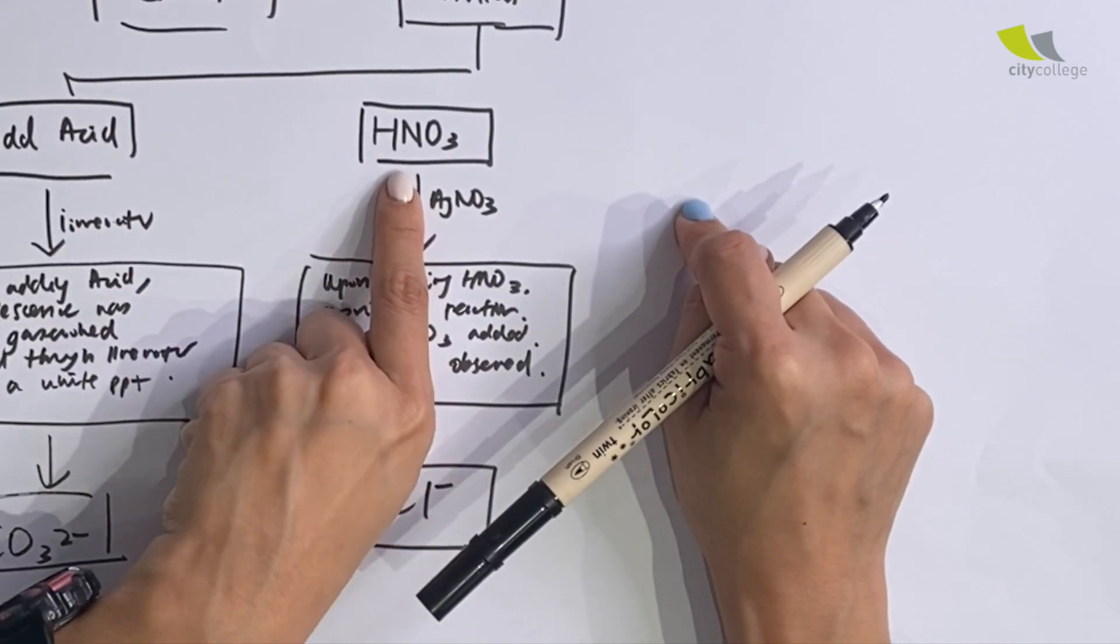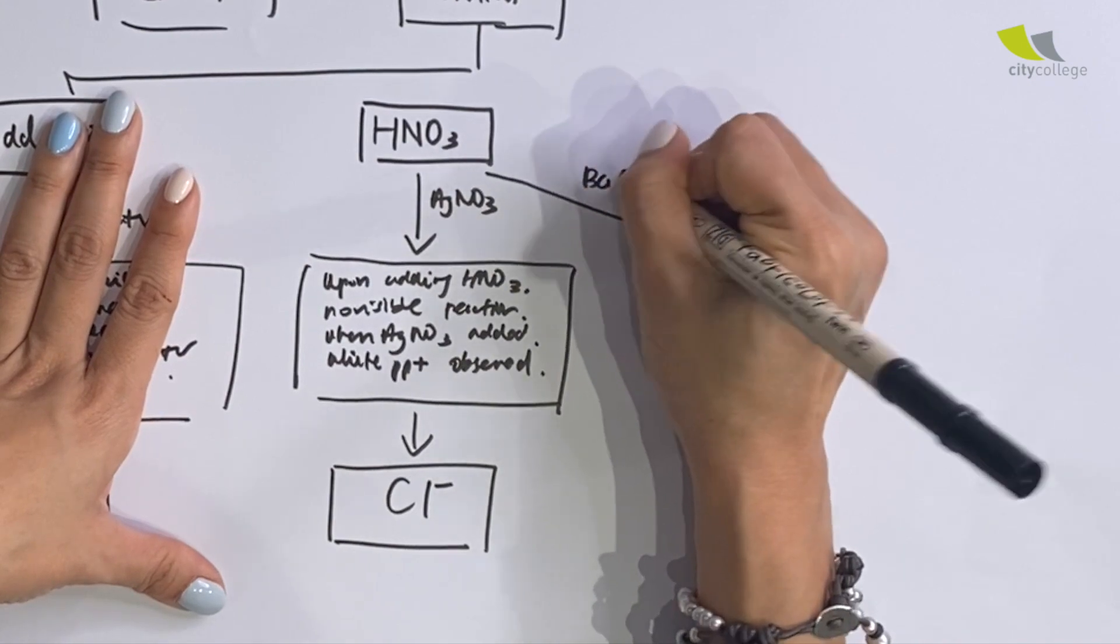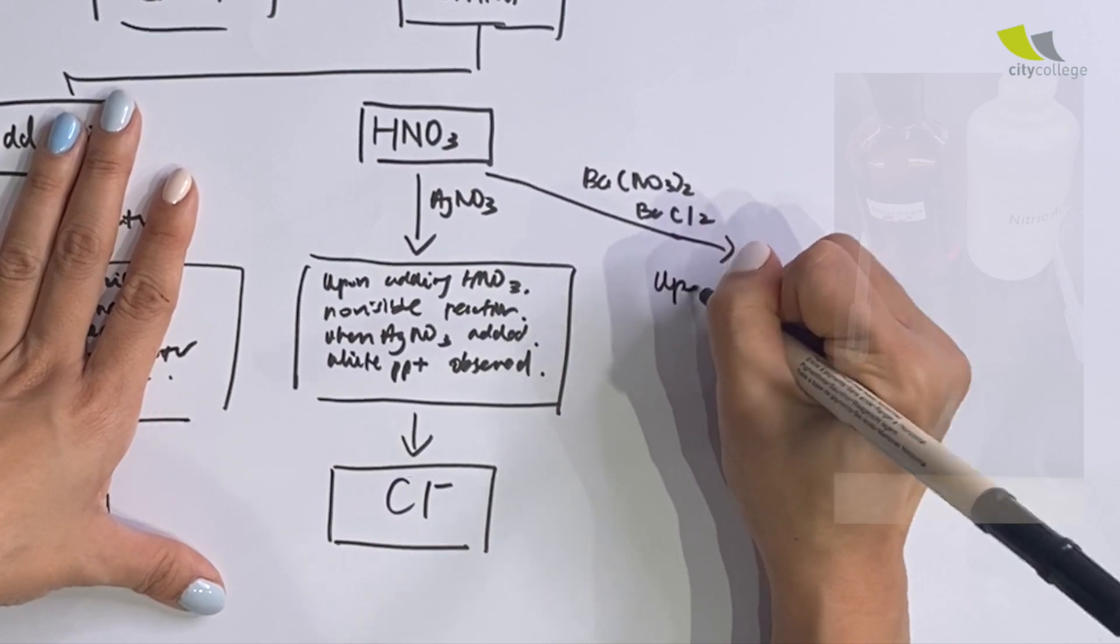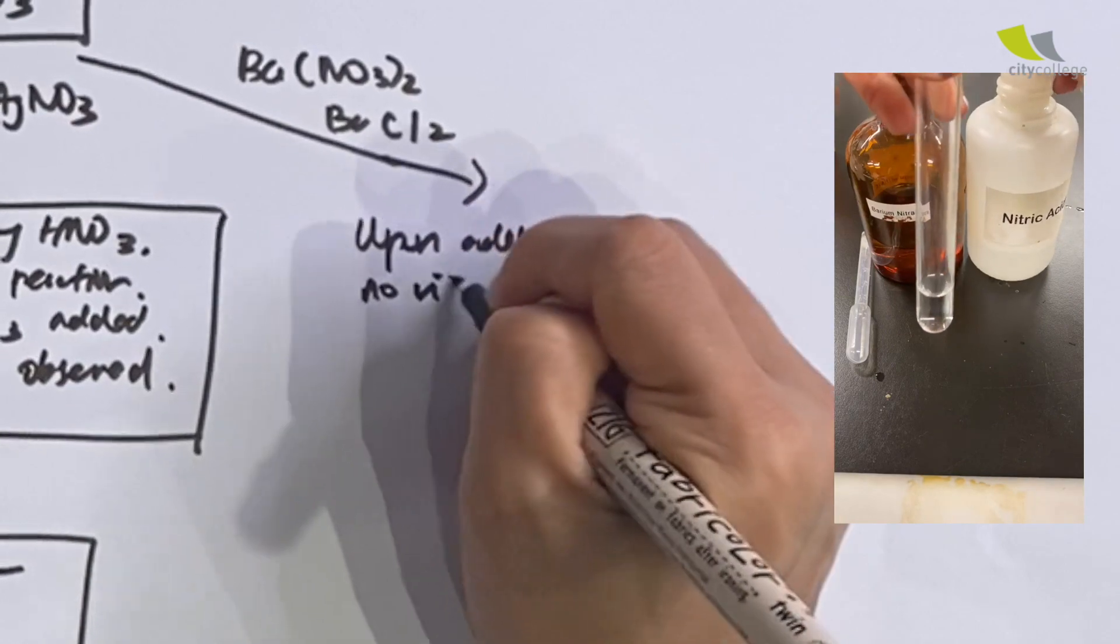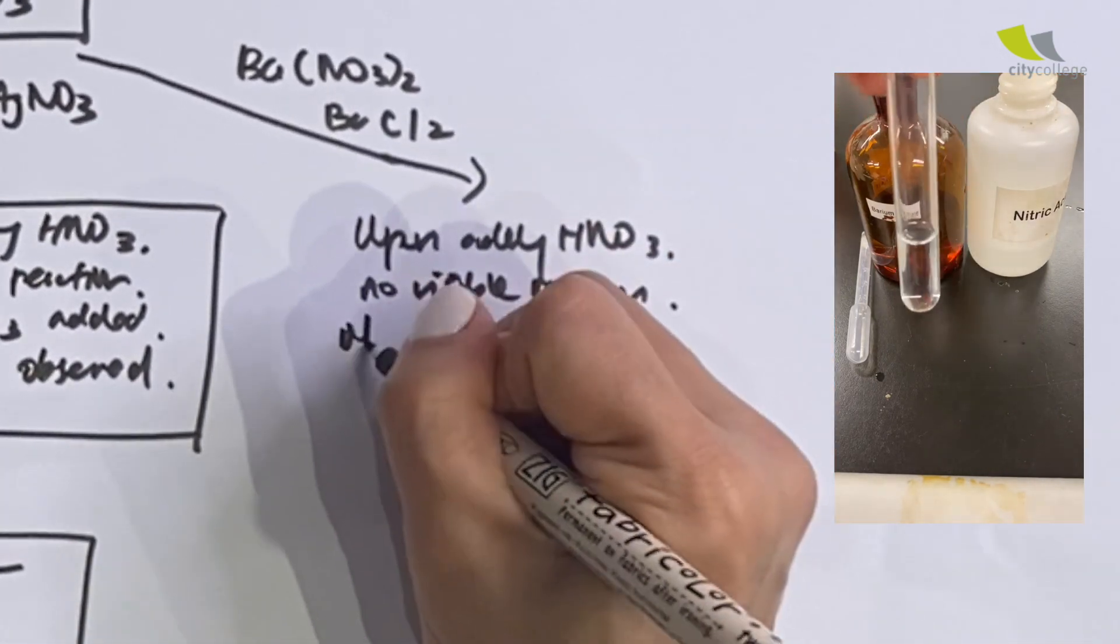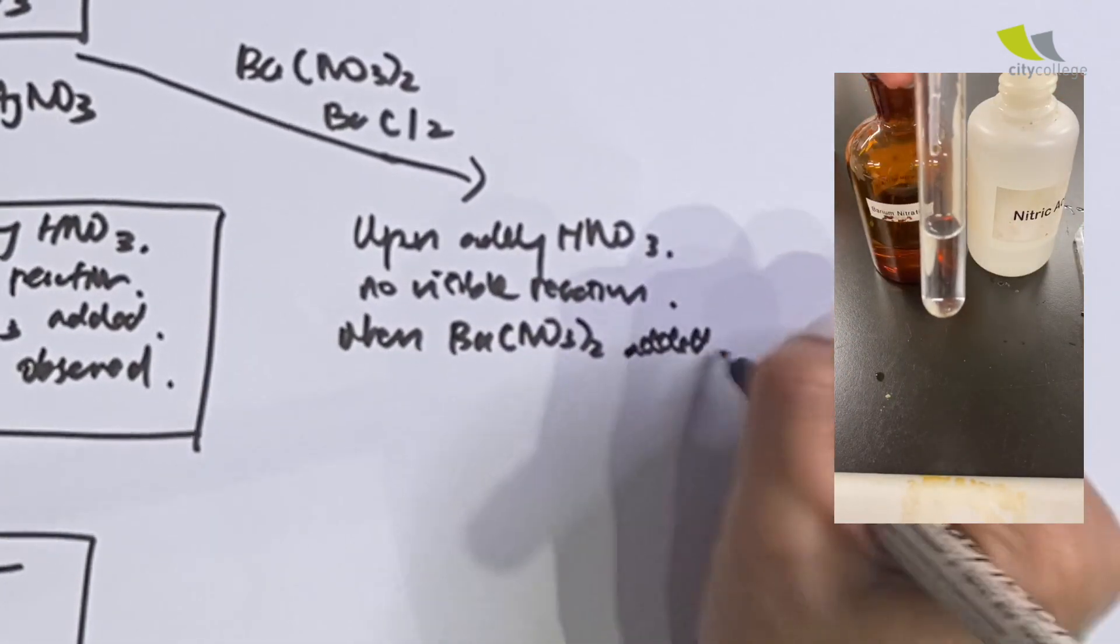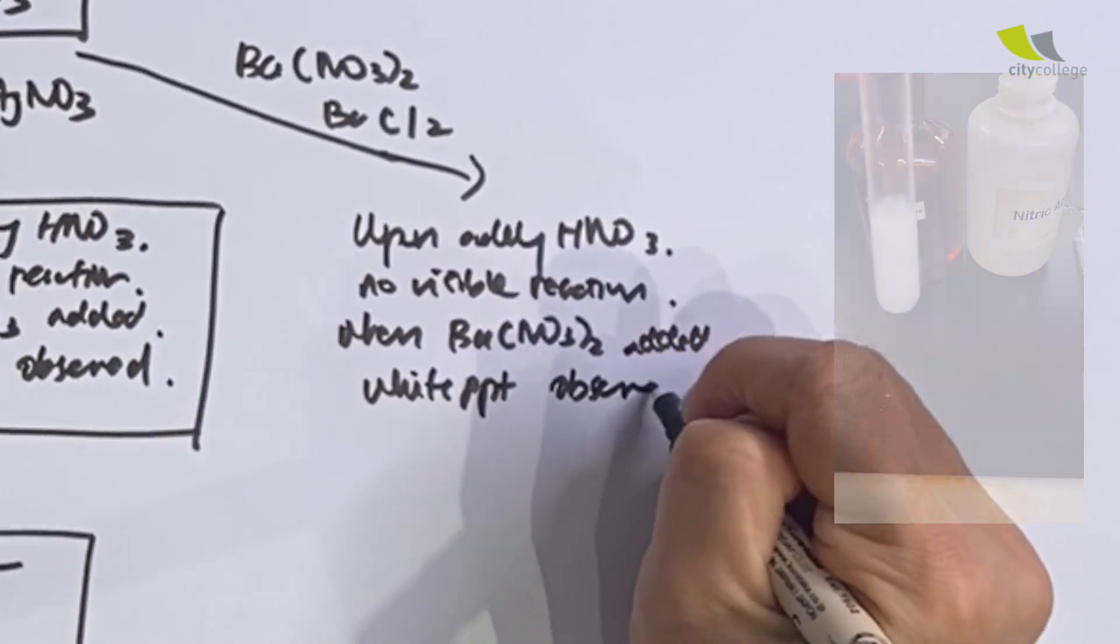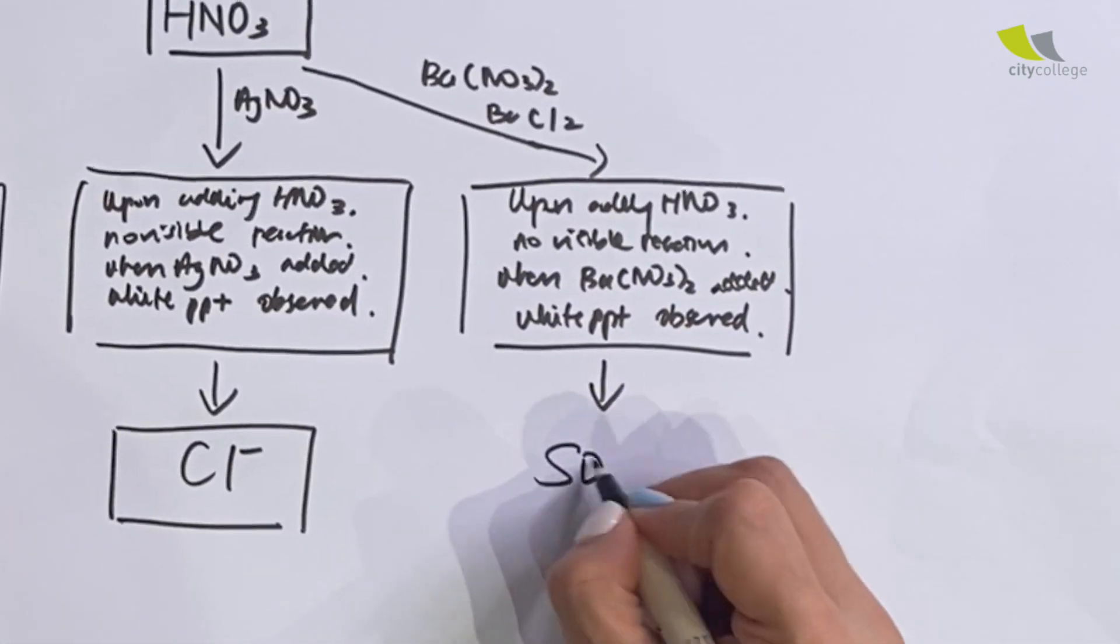Next, they also add nitric acid. However, this time round, we added barium nitrate. Sometimes barium chloride. Observation: upon adding HNO3, no visible reaction. When barium nitrate added, white PPT observed. Sulfate present.